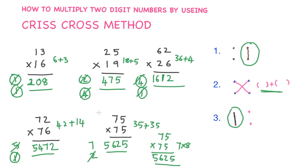In this way, you can use criss-cross method to find multiplication of any two-digit numbers. In next class, we will learn how to multiply three-digit numbers by using criss-cross method. I hope you understand this class. If you want to follow my classes, please subscribe to my channel. Thank you.